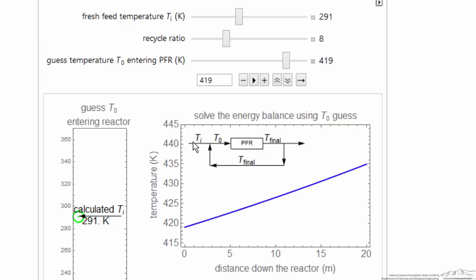419 is the temperature entering the reactor, that's T0. The inlet temperature of the system is 291. It solves for the outlet temperature from the system, which looks like it's about 435.